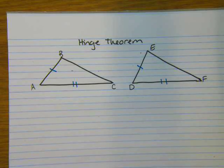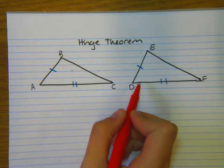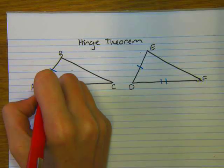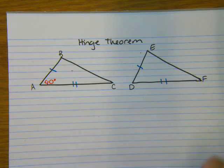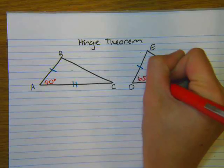So what Hinge Theorem says, the triangle with the larger included angle, so if we were to include an angle in here somewhere, we would say that that angle will then result in a larger third side. So my included angle would be A or D. Let's say A is 40 degrees, and D, let's say that's 65 degrees.